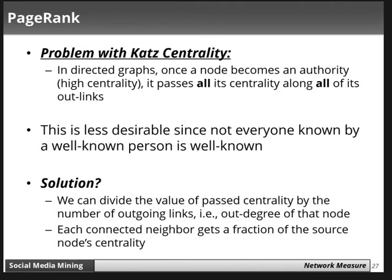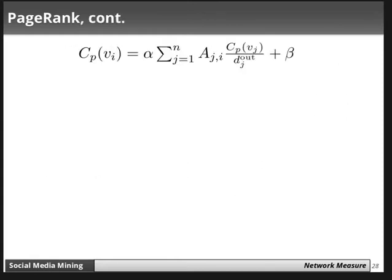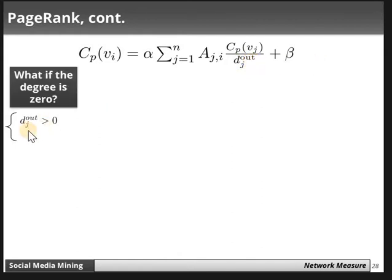The solution is to divide the passed centrality by the number of outgoing links. Instead of passing full authority to all outgoing links, we divide the centrality among the out-degree of that node, so each connected neighbor gets a fraction of the source node's centrality. This leads to the PageRank formula: c_PR(vi) = alpha * summation over j of c_PR(vj) / d_j^out plus beta, where d_j^out is the out-degree of node j.